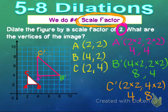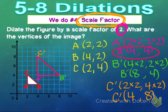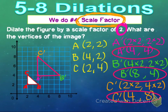The question asked us to list the new vertices. So the real answer we're looking for: A prime at (4, 4), B prime at (8, 4), and C prime at (4, 8).